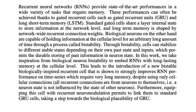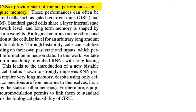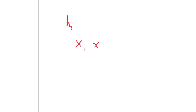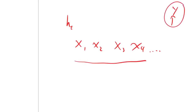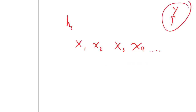Recurrent neural networks provide state-of-the-art performance in a wide variety of tasks that require memory. A classic RNN has a hidden state at time step t and processes a sequence of inputs x1, x2, x3, x4, and so on, then at some point provides an output — either at every time step or just at the end. For example, the input could be a piece of text to classify as spam, or a time series of a patient in an ICU to decide on medication.